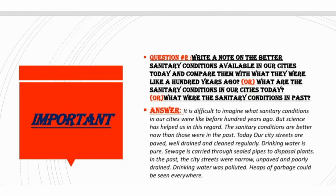Sewage is carried through sealed pipes to disposal plants — جہاں پر ان کو ضائع کیا جاتا ہے. In the past, city streets were narrow — گلیاں تنگ تھیں — unpaved, and poorly drained. Drinking water was polluted, and heaps of garbage could be seen everywhere — ہر جگہ کوڑا کرکٹ کے ڈھیر دکھائی دیتے تھے. So in this question we compared present conditions with past conditions.